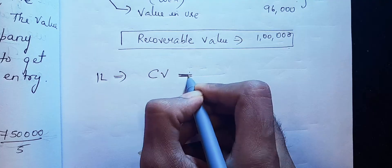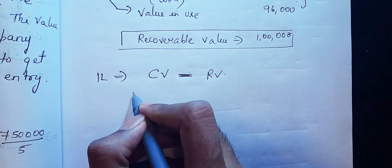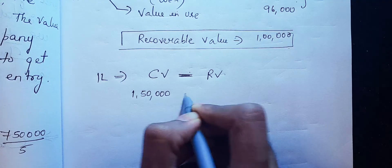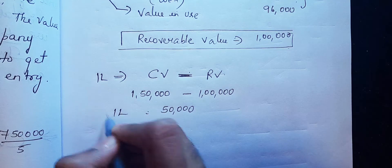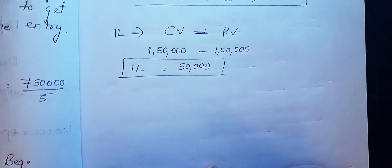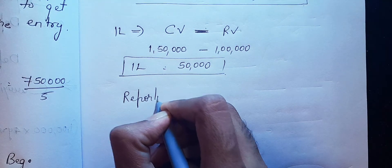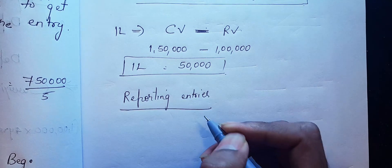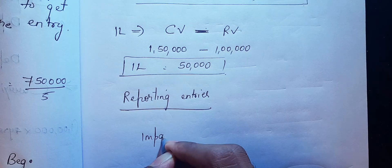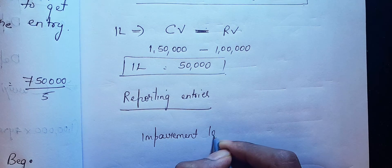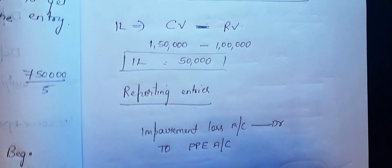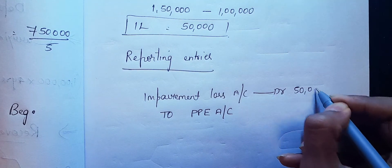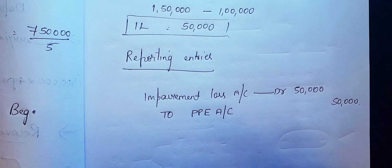Now find the impairment loss. The formula is: carrying value minus recoverable value. Carrying value is one lakh fifty thousand, minus recoverable value of one lakh, so the impairment loss is fifty thousand rupees. For the journal entry: Impairment Loss Account debit, to PPE Account — for fifty thousand rupees. This is how we solve the problem.